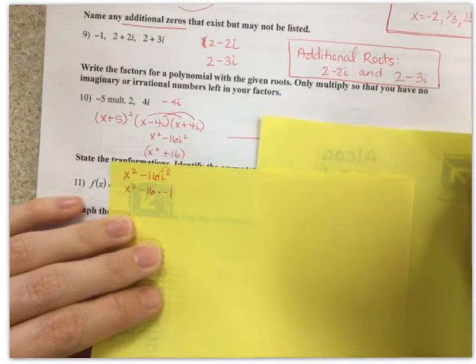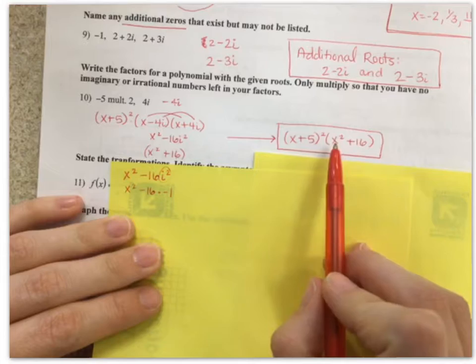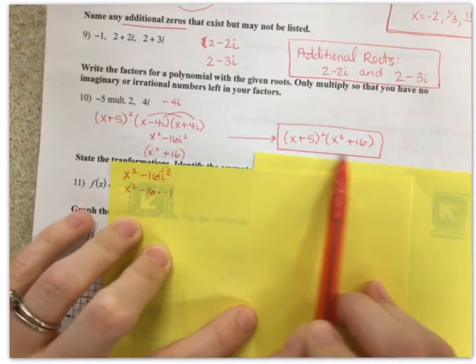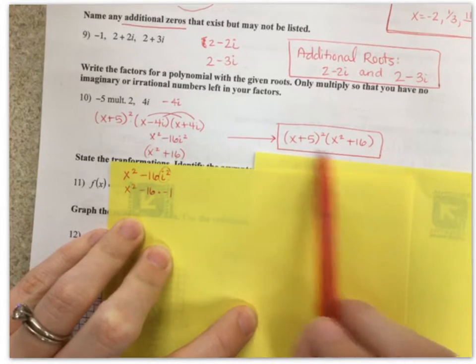So my final, final answer, x plus 5 squared, x squared plus 16. Notice, I know that I'm done because there are no more imaginary or square roots left in this answer.